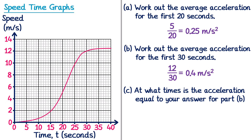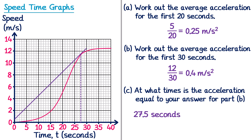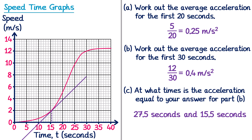Part C asks for the times when the acceleration equals the answer from part B (0.4 m/s²). Since acceleration equals gradient, we need points on the curve where the tangent has the same gradient as the chord we drew. By moving a parallel line until it becomes tangent to the curve, we find two answers: t = 27.5 seconds and t = 15.5 seconds. Both points have an acceleration of 0.4 m/s².